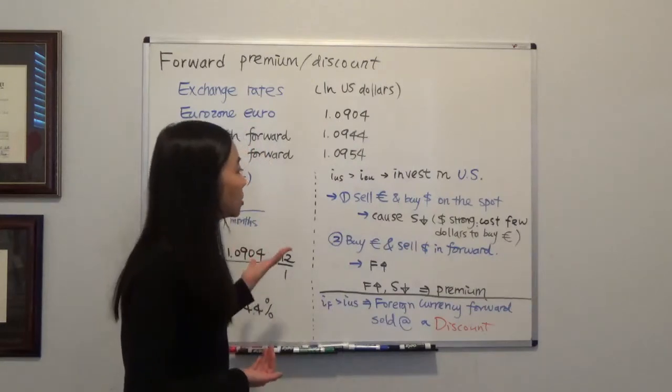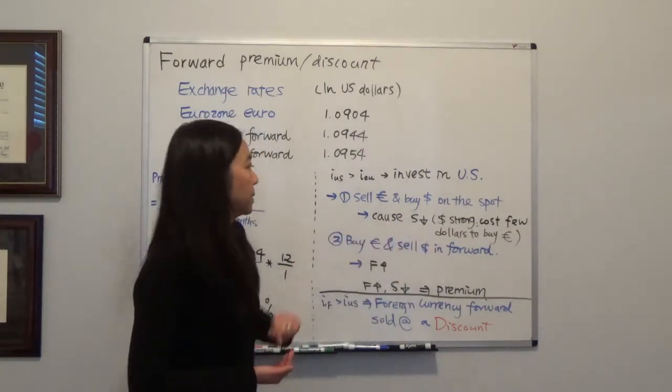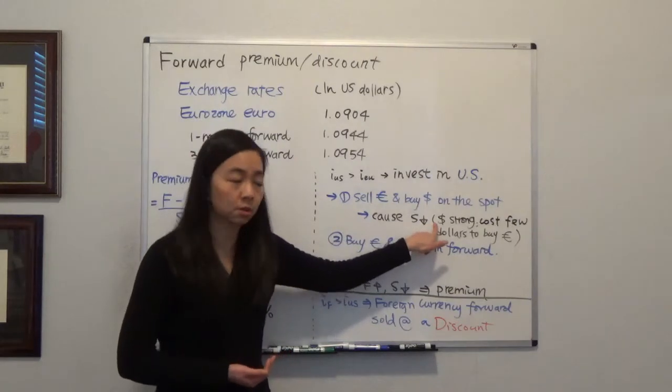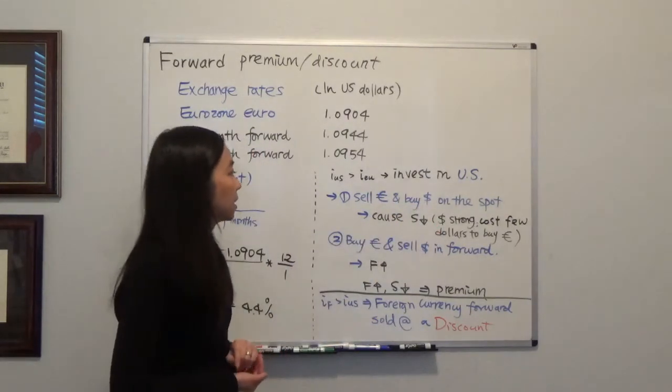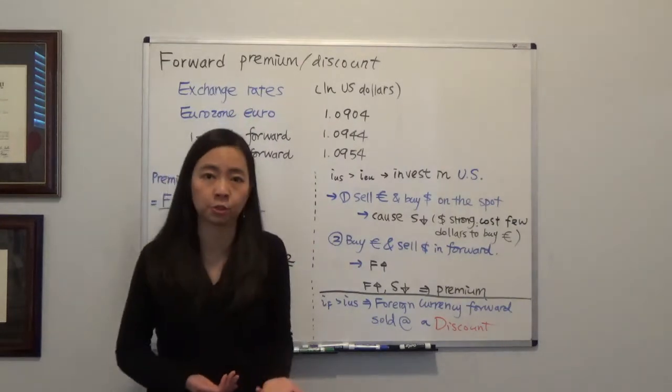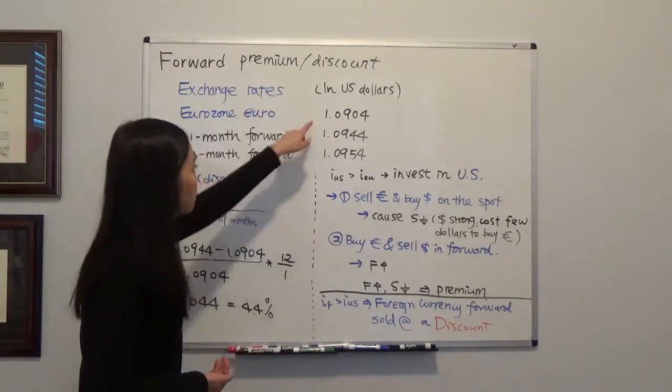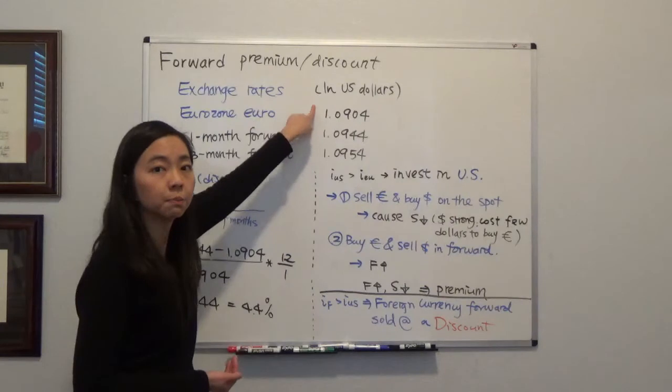And that is going to cause the spot rate to go down. Why is that? Because the dollar is going to be strong because they're trying to buy dollars on the spot, and therefore it costs fewer dollars to buy one euro. Therefore the spot rate is going to go down, become smaller.